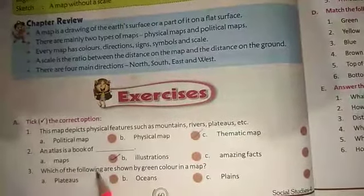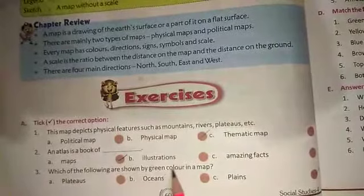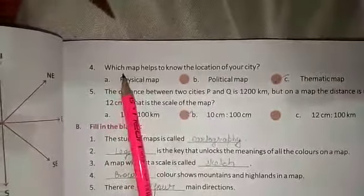3. Which of the following are shown by green color in a map? C. Plains. Now 4. Which map helps to know the location of your city? The answer is B. Political map.